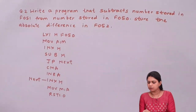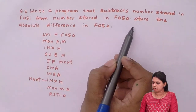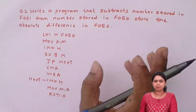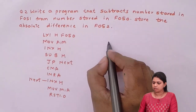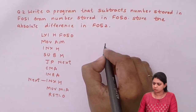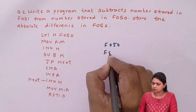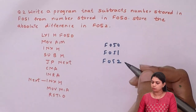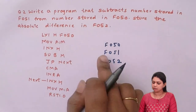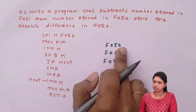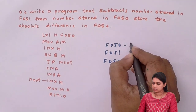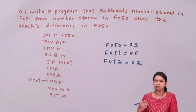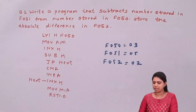The second program: write a program that subtracts the number stored in F051 from the number stored in F050, and stores the absolute difference in F052. We have to perform subtraction of 2 numbers from two memory locations F050 and F051, and store the result in F052. For example, if F050 contains 3 and F051 contains 5, the answer will be 2.